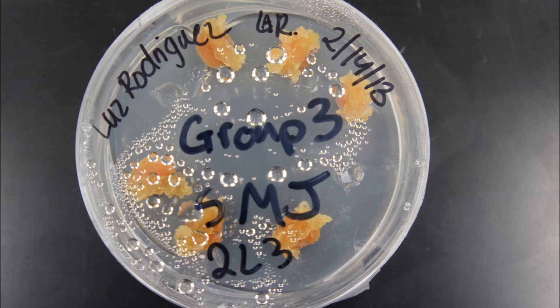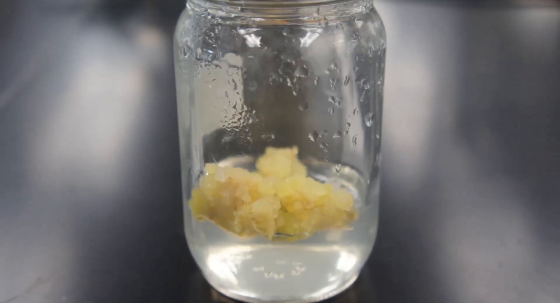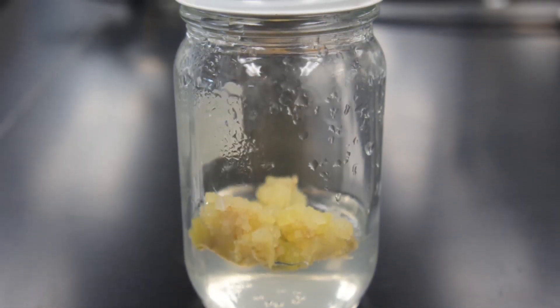In one to two weeks, callus will begin to form on the explants. In four to six weeks, it will be one centimeter in diameter.